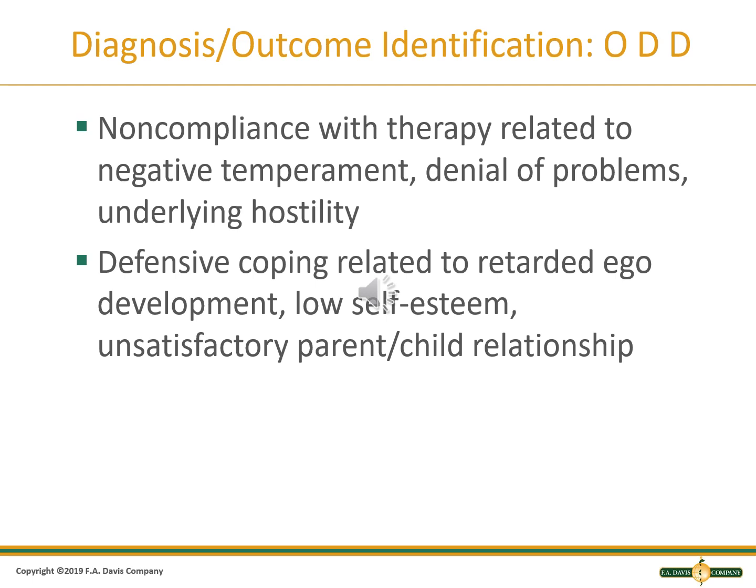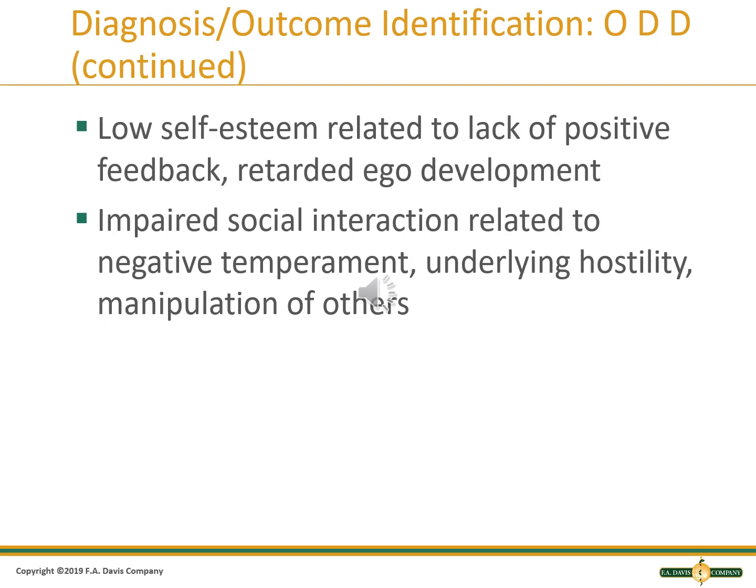Possible nursing diagnoses and outcome identification for ODD patients include: non-compliance with therapy related to negative temperament, denial of problems, and underlying hostility; defensive coping related to retarded ego development, low self-esteem, and unsatisfactory parent-child relationship; low self-esteem related to lack of positive feedback and retarded ego development; and impaired social interaction related to negative temperament, underlying hostility, and manipulation of others.